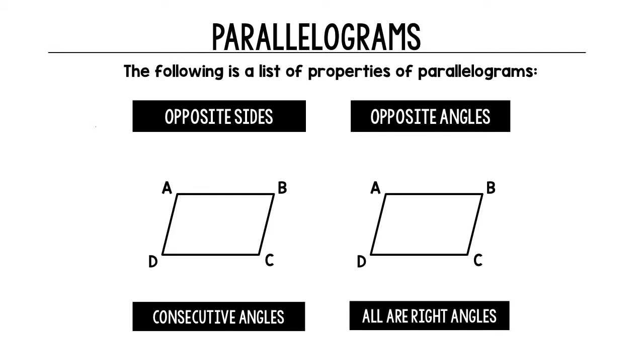Following is a list of the properties of parallelograms. What do we know about opposite sides? We know that they are congruent. So opposite sides AB and DC are congruent. BC and AD are also congruent.